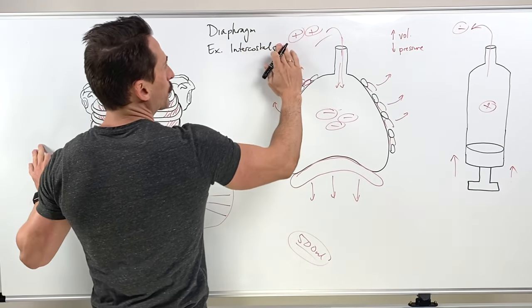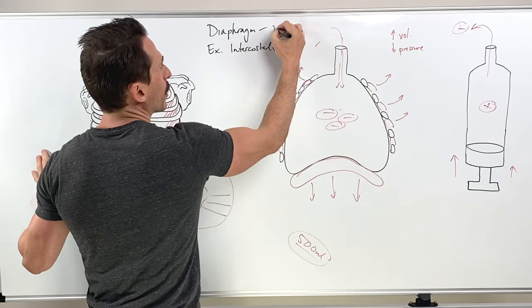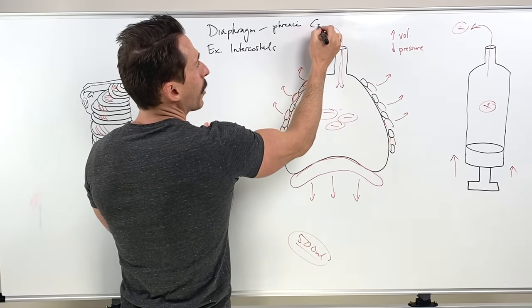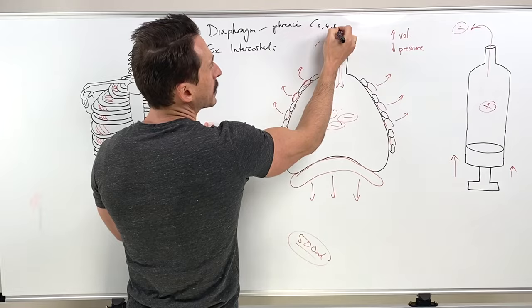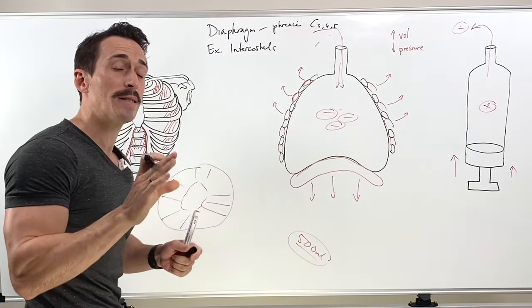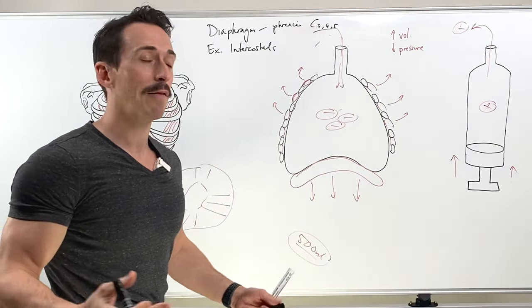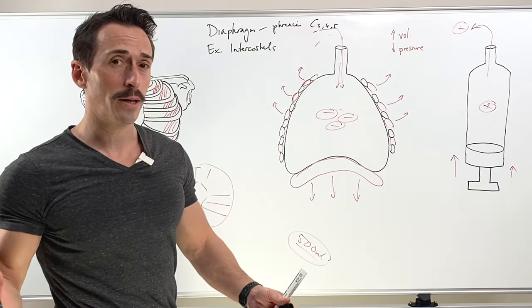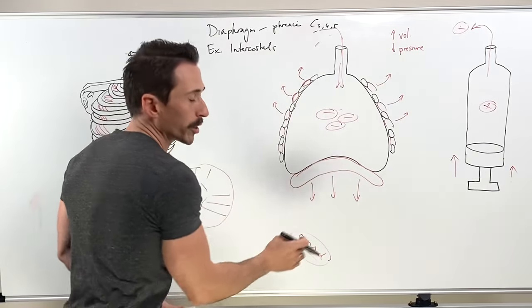Now the diaphragm is innervated by the phrenic nerve, which comes from C3, C4, C5. And you remember that by C3, C4, C5 keeps you alive. Because if this nerve doesn't work due to damage to this area, spinal cord injury potentially, the diaphragm will not contract.